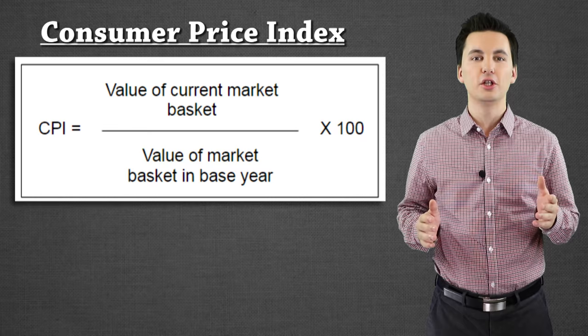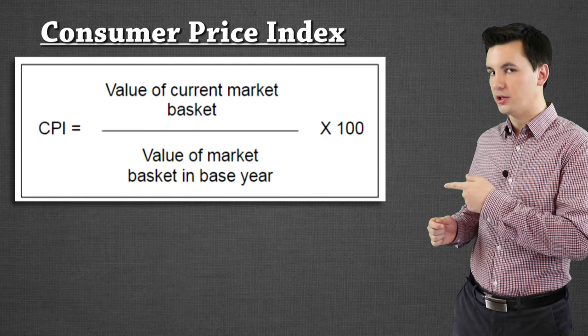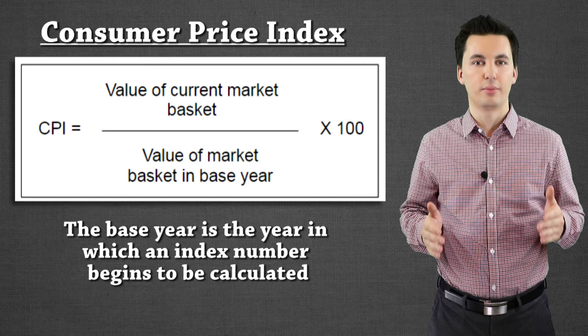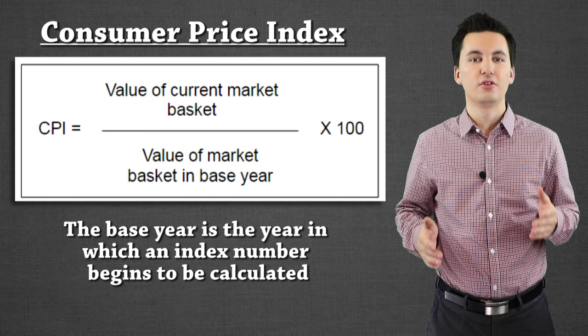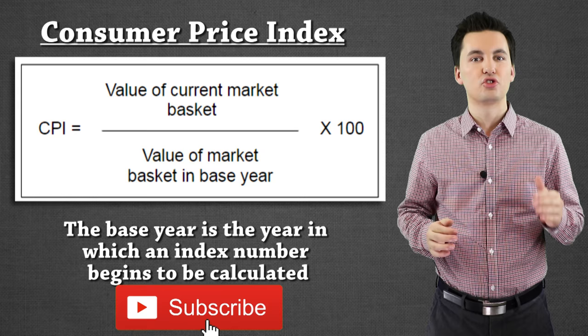Our CPI will equal the current value of our market basket — referencing whatever year we're trying to find — divided by the base year value, and then times by 100. The base year is the year whose value we'll compare to all other years. This gets our CPI. Now this isn't necessarily a percent — it's an index number. But it does show us a percent change compared to the base year, not between year to year.